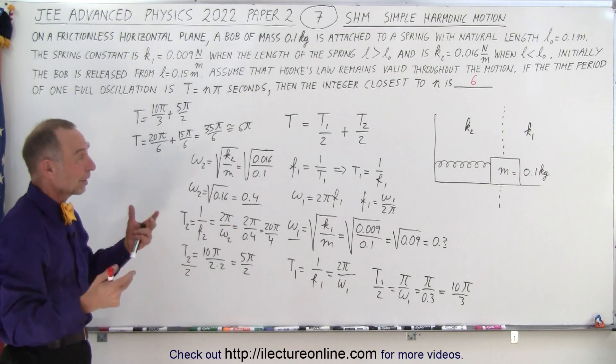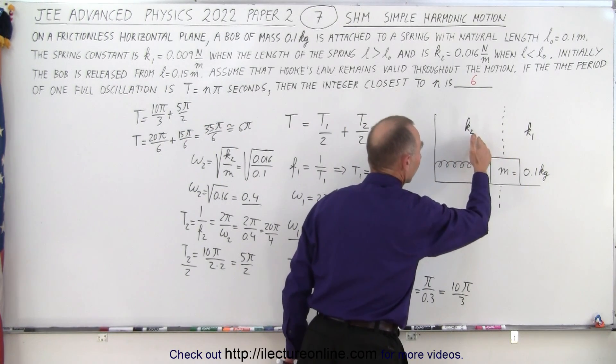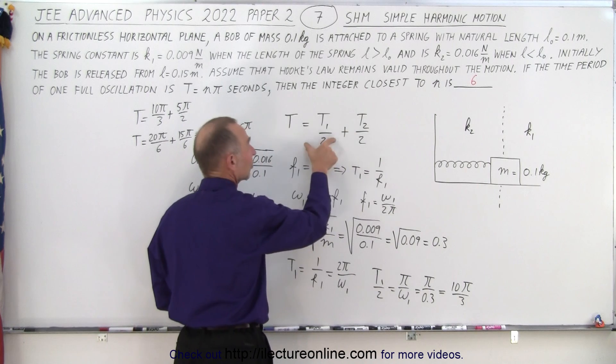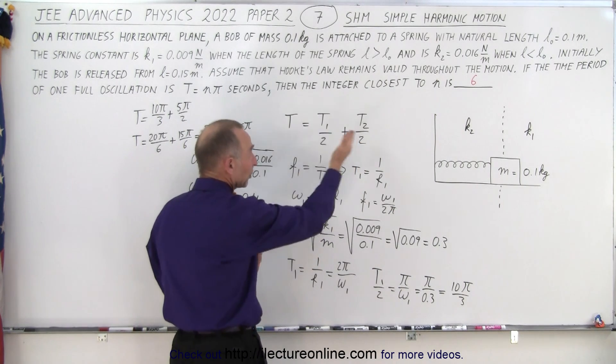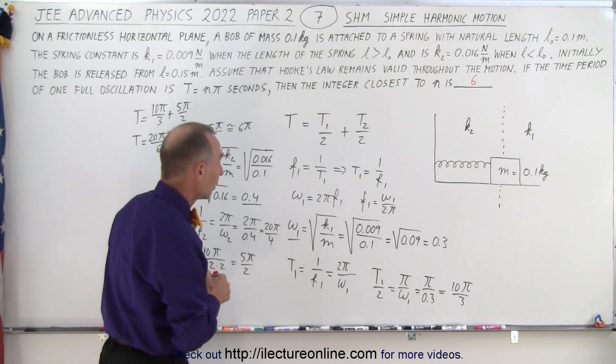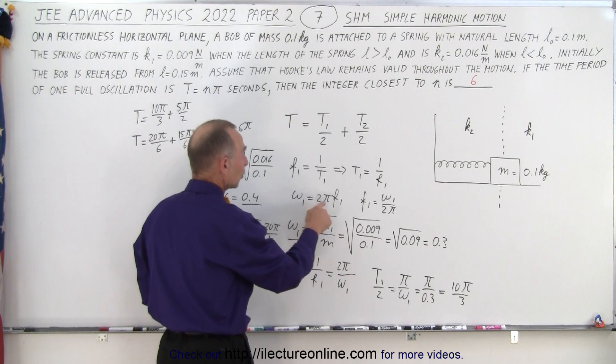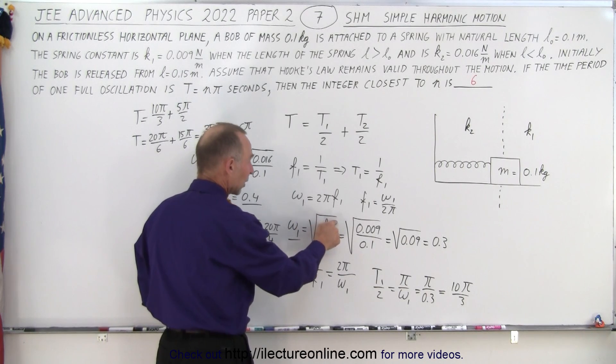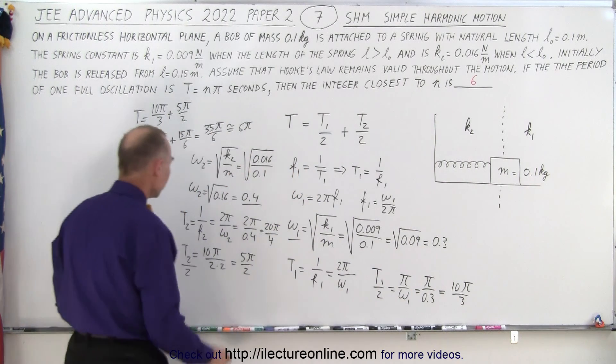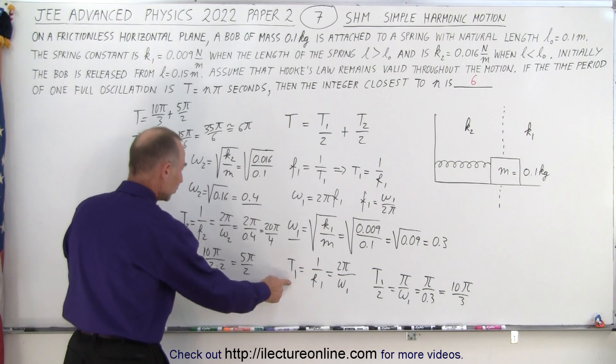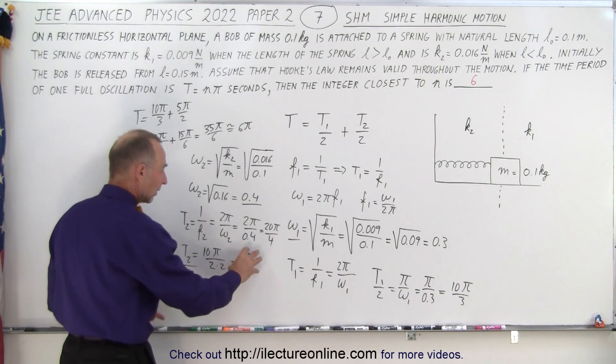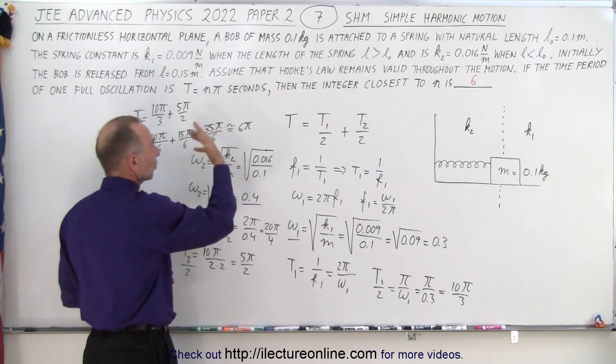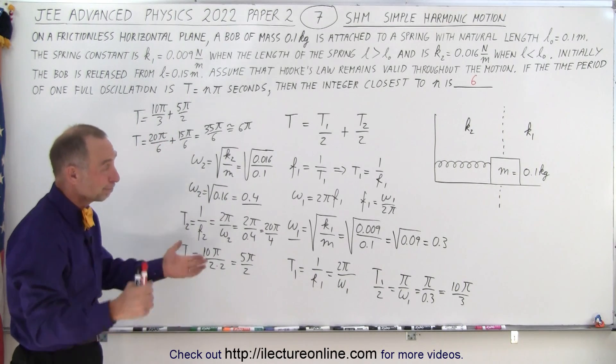So again to realize how to do this problem is to realize that we have two different spring constants, so two different frequencies on both sides. We then say well we're going to calculate the period of each half of the oscillation added together to get the total period. Each period will be different because it's a different spring constant therefore different frequency. We remember the relationship between period and frequency and the relationship between frequency and the angular frequency. And also knowing that the angular frequency is defined as the square root of the spring constant divided by the mass. So we calculate that out for omega 1 for omega 2. Then we calculate T1 T2 divide both sides by 2 to get half the period and the other half of the period. Put it together and we get the total period is 35 pi over 6 which is approximately 6 pi so the answer is 6. And that is how it's done.